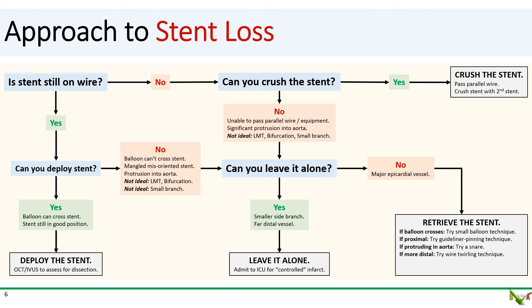Another technique is the guide pinning technique, which is useful if your stent is close to the ostium. In this technique, try to sheath part of the stent into your guide or guide liner, then inflate a balloon in the guide next to the stent. This pins the stent against the wall of the guide, and you'll be able to pull everything out. If your stent is protruding into the aorta, snaring — usually with a gooseneck — might be a good option.